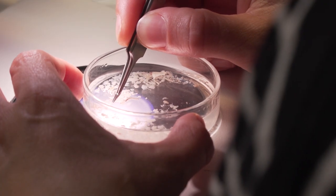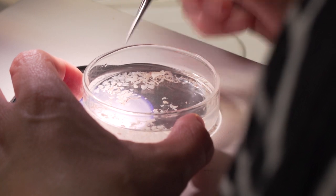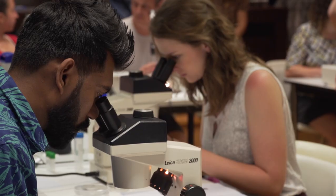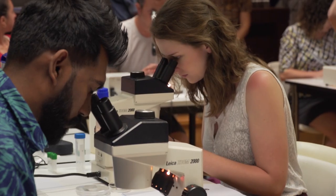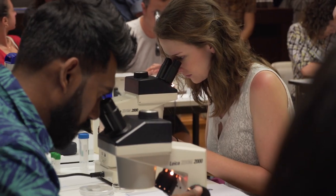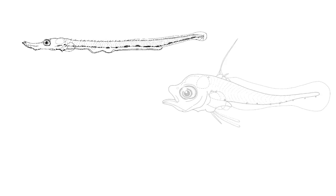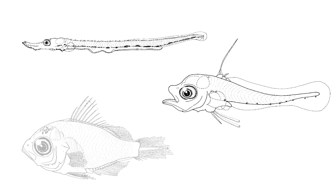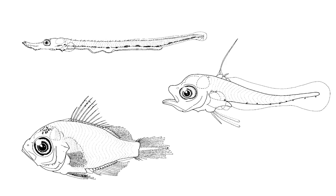What is a fish larva? There's no single answer. Ontogeny is not easily divided into segments. In fact, some invertebrate researchers will say that fish do not really have larvae because they don't metamorphose in the same way that so many invertebrates do.